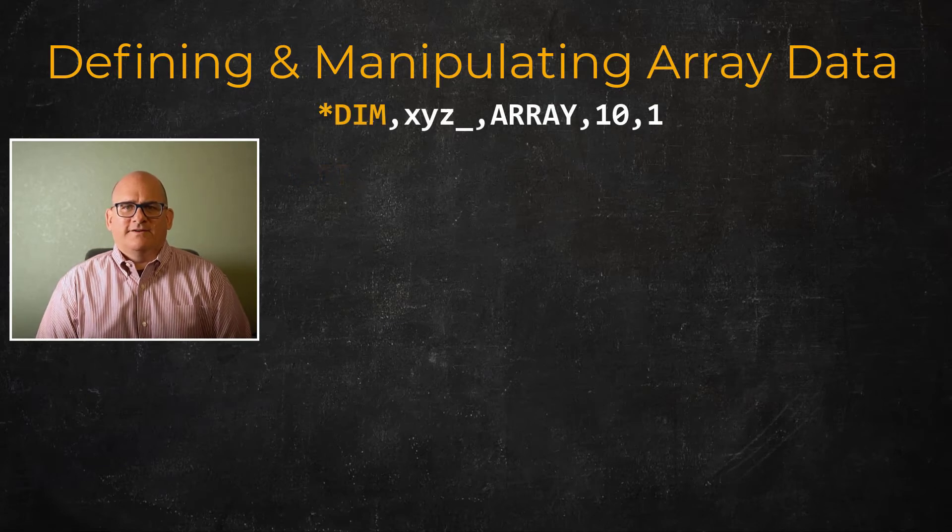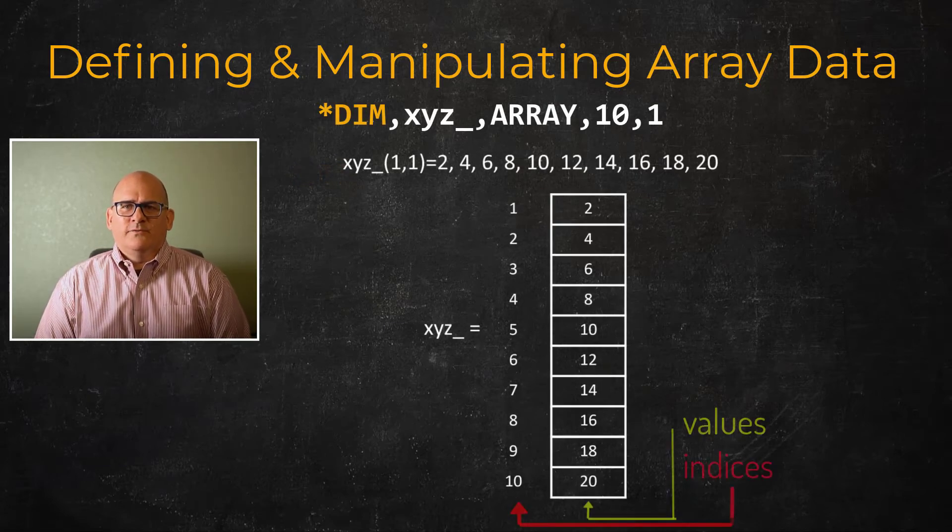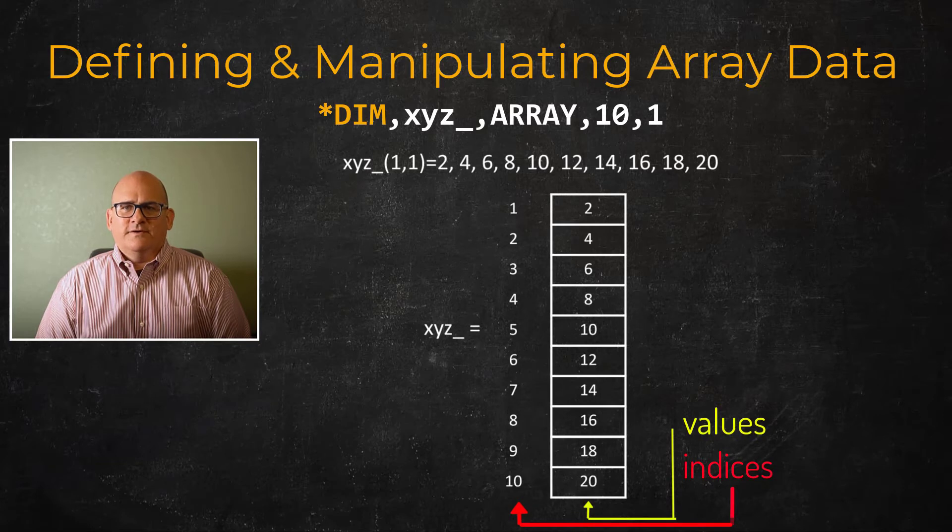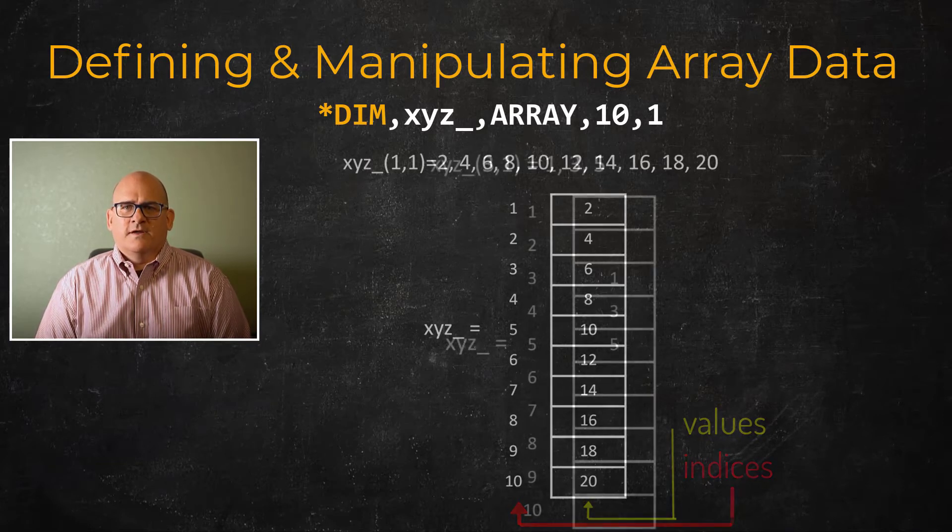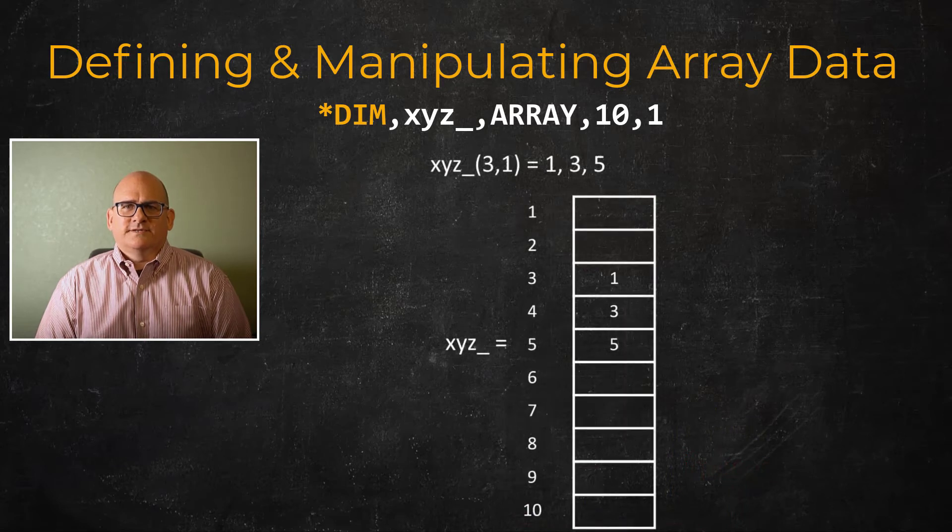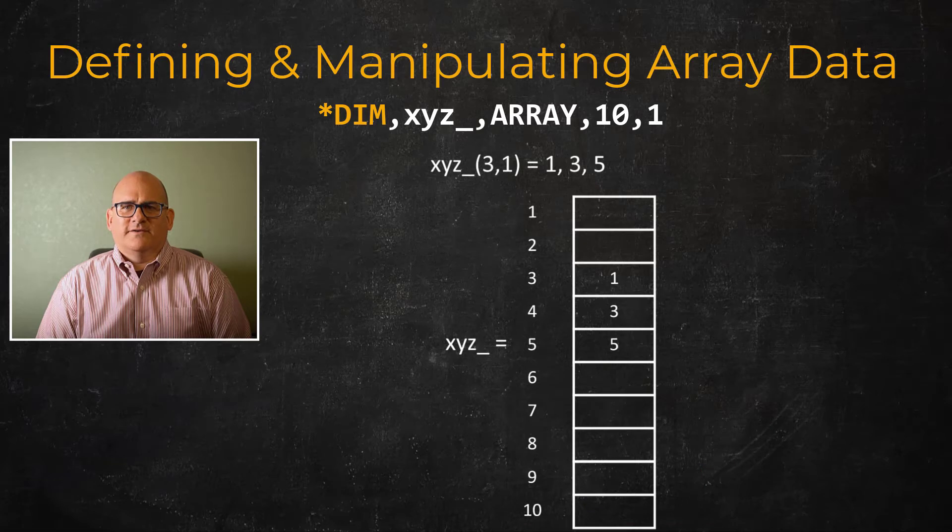Let's say we have a 10 element vector named xyz. Then we could fill out the whole vector like so, which fills out the vector with the first 10 even numbers. Alternatively, we could use this to define the first three odd numbers starting at the third element of the vector.